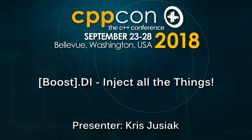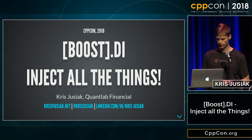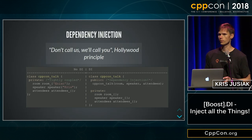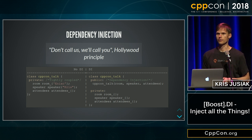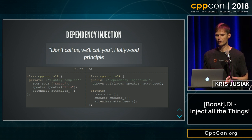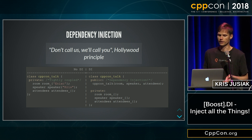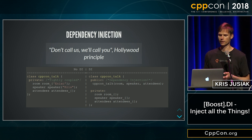This talk is a quick overview of different ways of applying dependency injection techniques in C++. Dependency injection is basically a $25 term for a five-cent concept, because it's all about the construction. On the left side, we can see the CVPCON talk which is tightly coupled to dependencies — that's not DI. On the other side, we have DI, in which we have a constructor where we pass all the dependencies through it, decoupling the business logic and object creation.